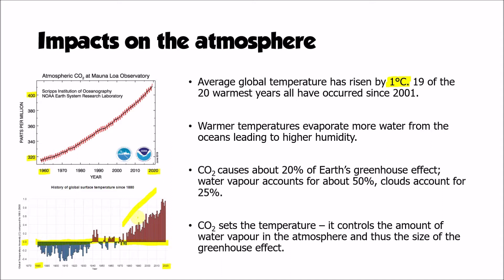As a result of these warmer temperatures we are also experiencing more evaporation, which leads to higher humidity levels. That's important because water vapour is a greenhouse gas and actually contributes to the greenhouse effect. CO2 itself only causes about 20% of the Earth's greenhouse effect, while water vapour accounts for about 50%. Clouds and other gases cause about 25% of that warming, and the remaining 5% is accounted for by other minor gases and processes.